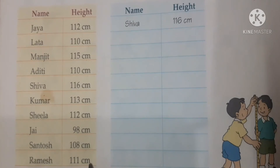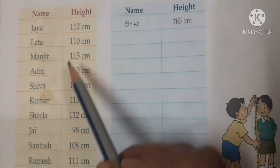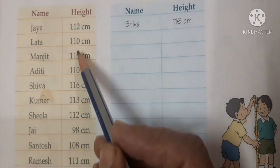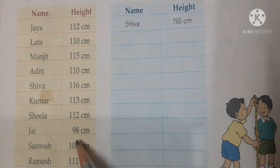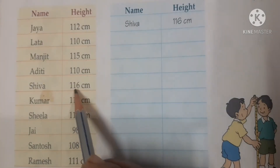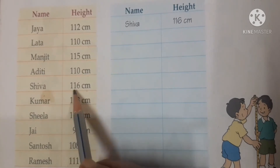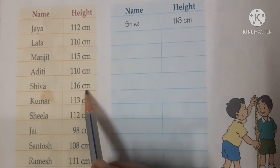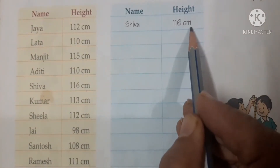So we have to arrange this from the tallest to the shortest. Who is tallest of all? Look here — Shiva is 116 cm. Shiva is the tallest of all. So we will write here: Shiva, 116 cm.